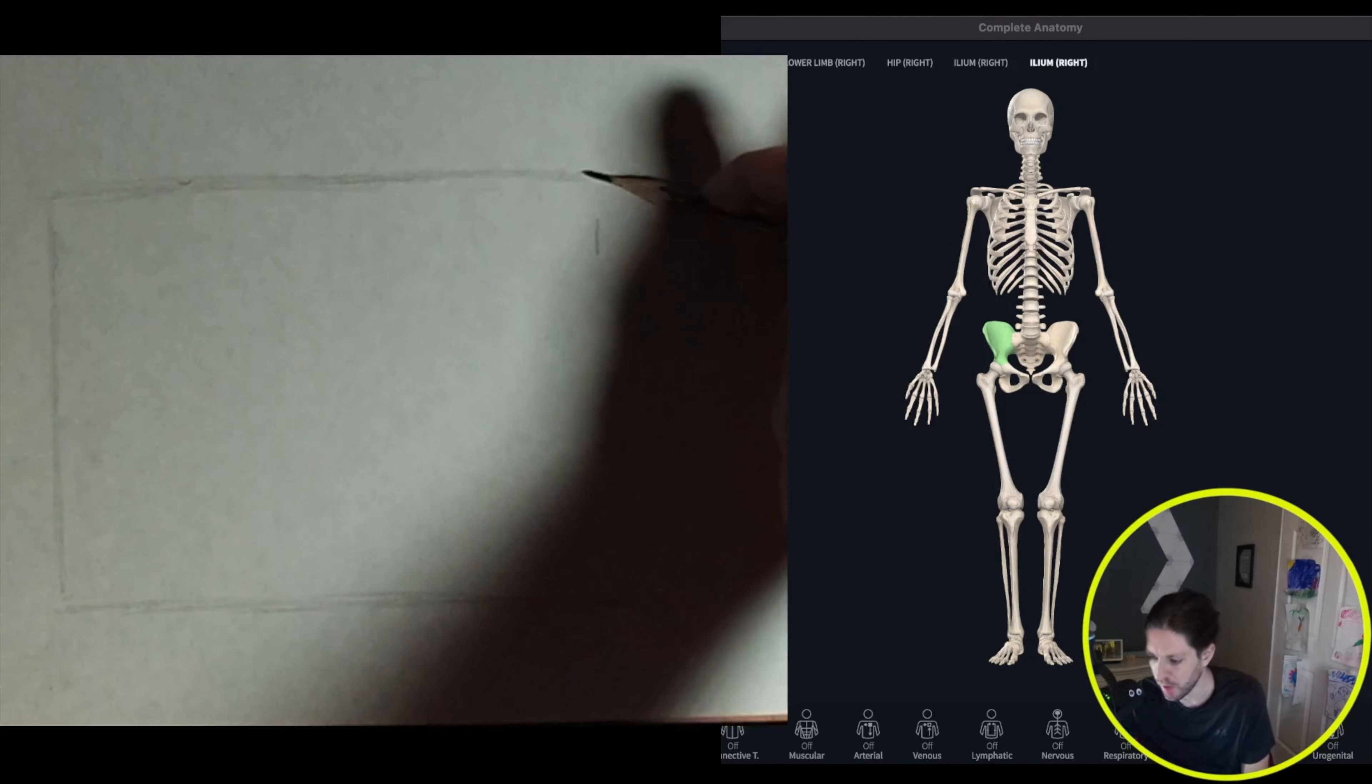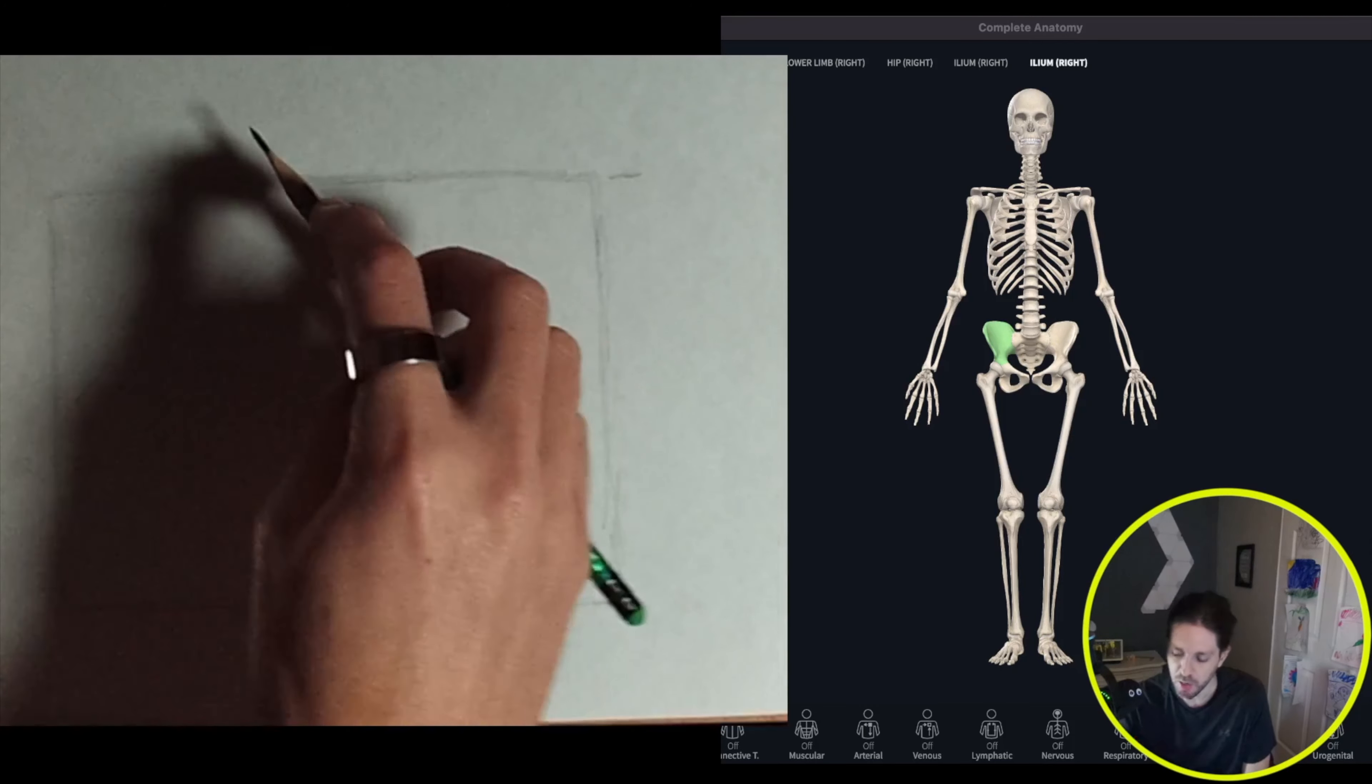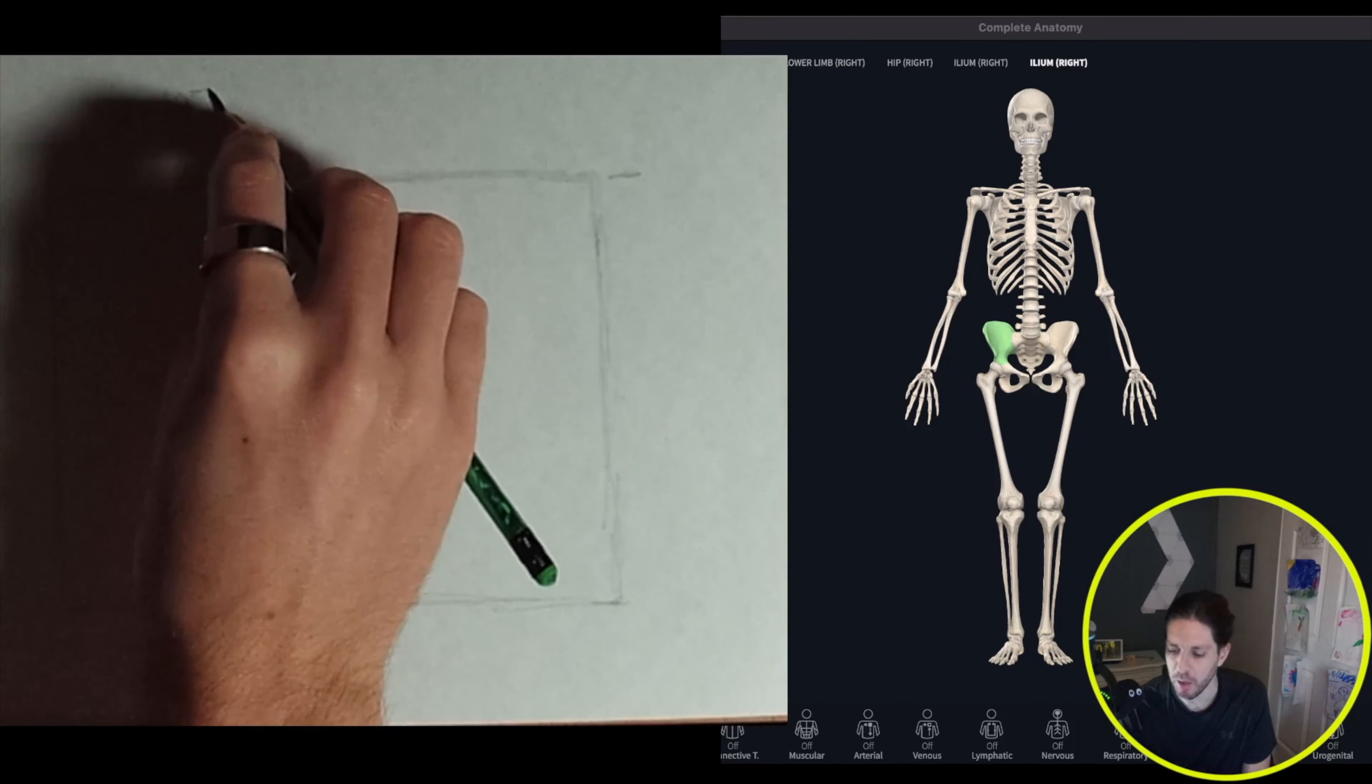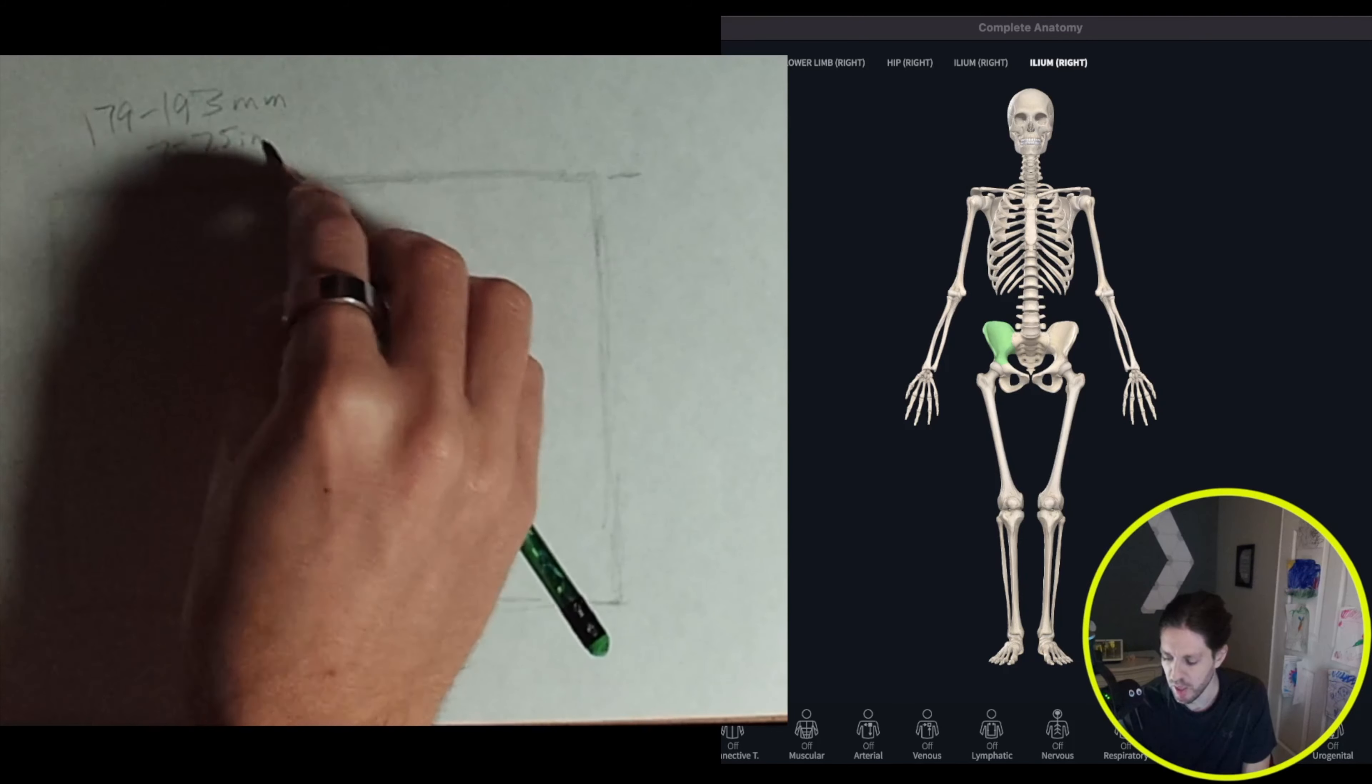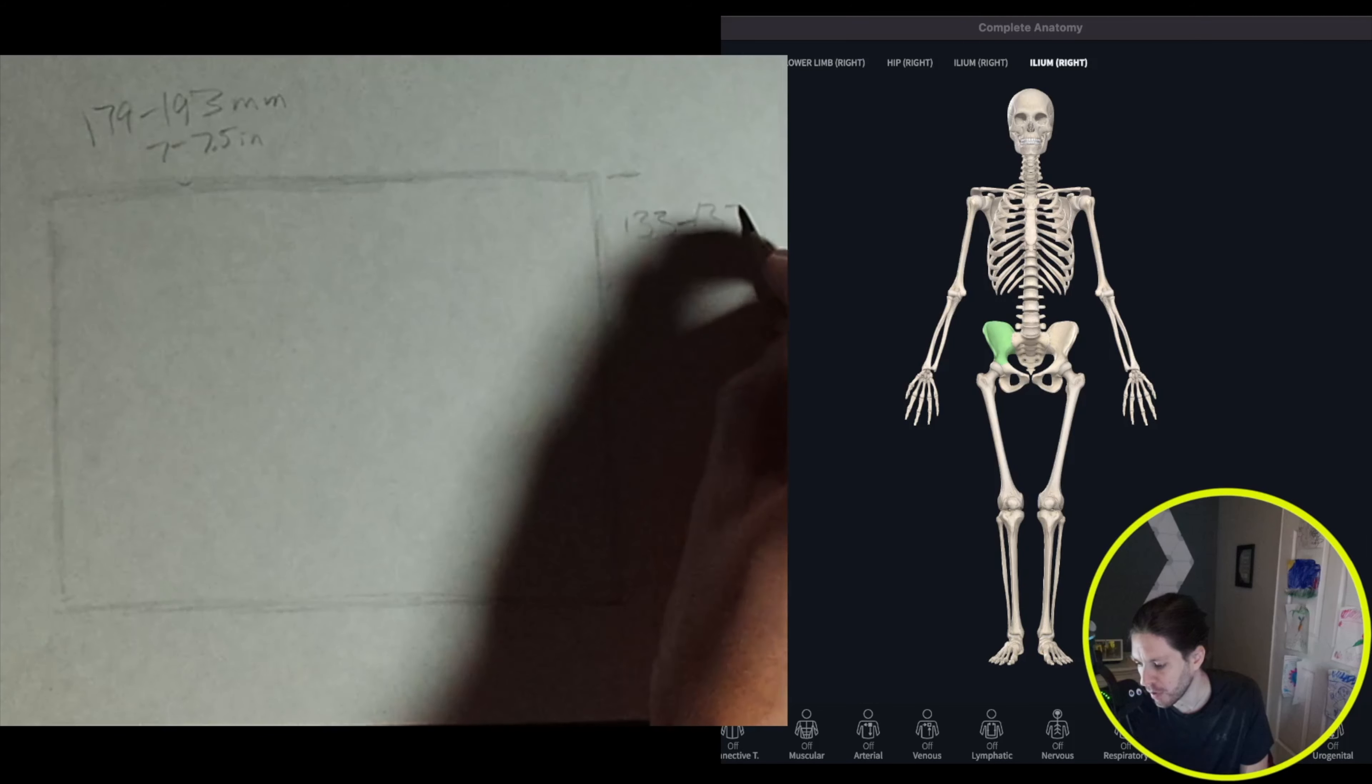So if you're curious on the dimensions, I'll write them down here. If you're female you're about 179, and if you're a male about 193 in millimeters, which translates between seven and seven and a half inches. And for the width, if you're a female about 133 and male about 137 millimeters, which is about 5.2 to 5.4 inches.